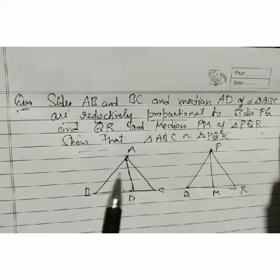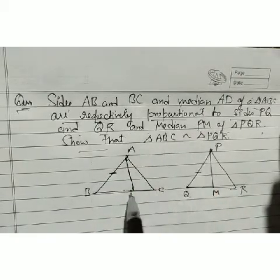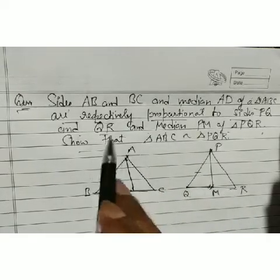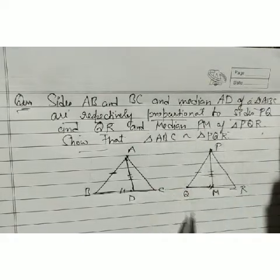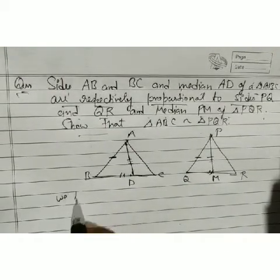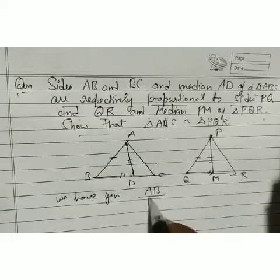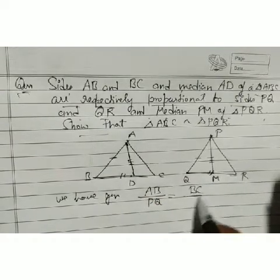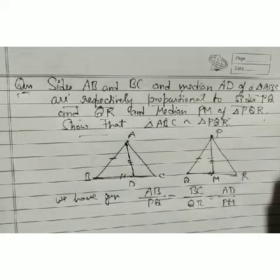What are we given? We have AB corresponding to PQ, BC corresponding to QR, and median AD corresponding to PM. So the given proportion is: AB/PQ = BC/QR = AD/PM.